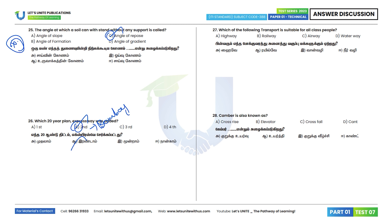27th question: Which transport is suitable for all classes of people? The highway is suitable for all classes. Option E. 28th question: Camber is also known as camber crossfall. Option E — this is the correct answer.